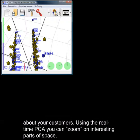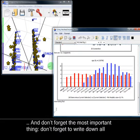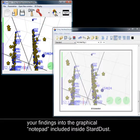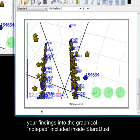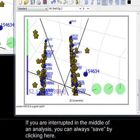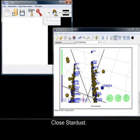Using the real-time PCA, you can zoom on interesting parts of space. And don't forget, the most important thing, don't forget to write down all your findings into the graphical notepad included inside Stardust. If you are interrupted in the middle of an analysis, you can always save by clicking here. Close Stardust. And later on, you will be able to go back exactly where you left off.